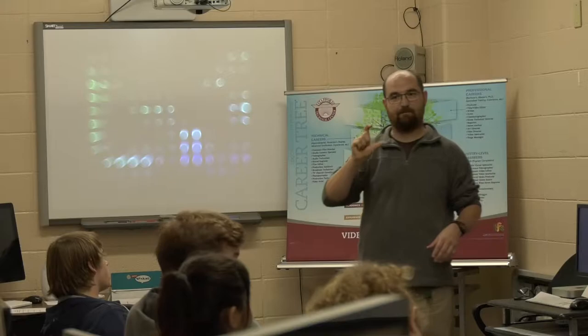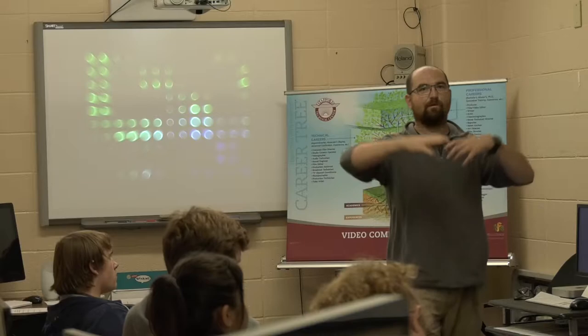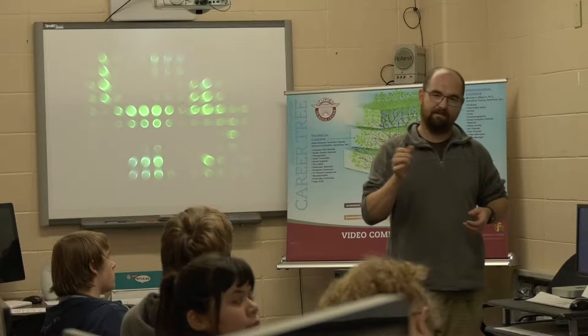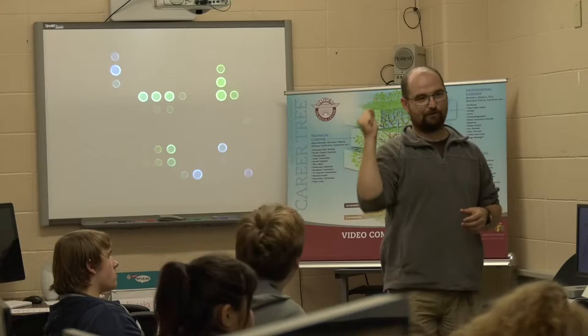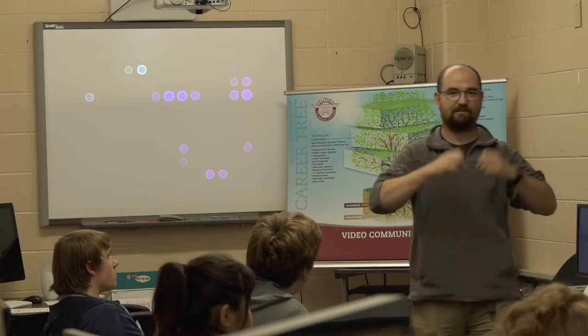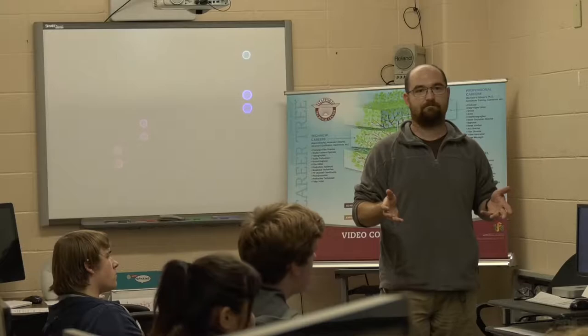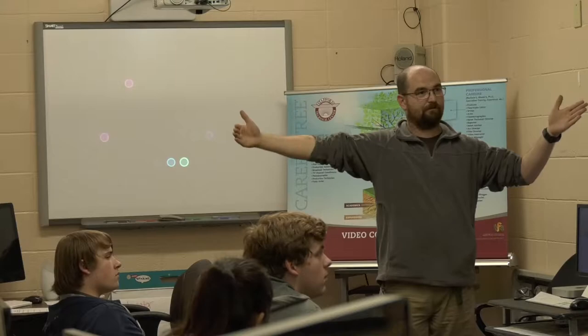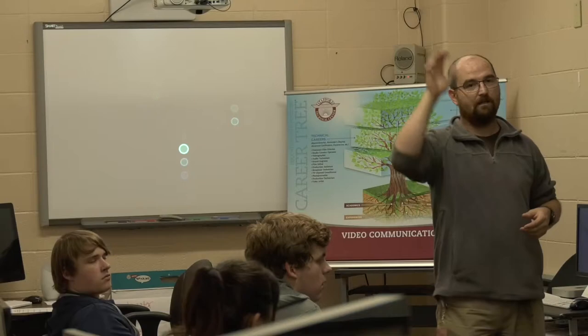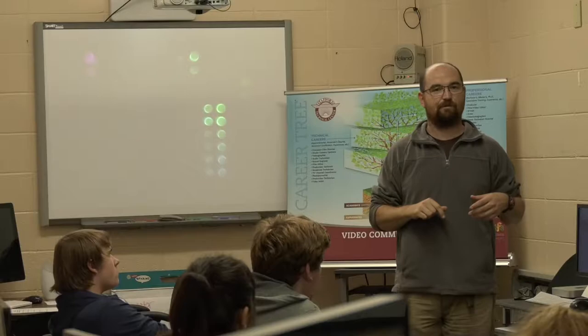Bulb mode — historically, cameras didn't have any timing mechanism, so you had a literal air bulb you squeezed to open the shutter, and when you released it, the shutter would close. Bulb is still a setting today, and it allows exposures greater than 30 seconds. You could theoretically do an 8-hour long exposure if you can hold that shutter open.